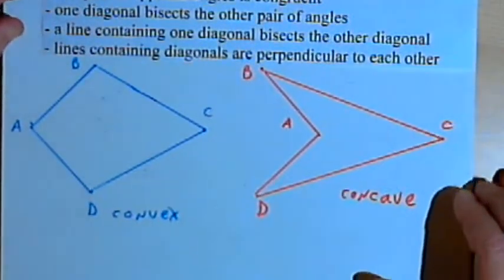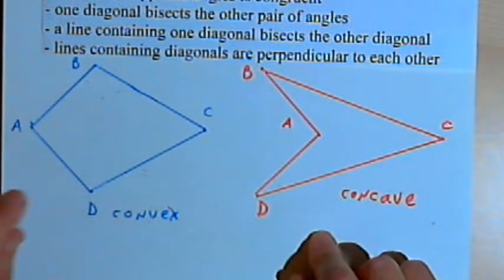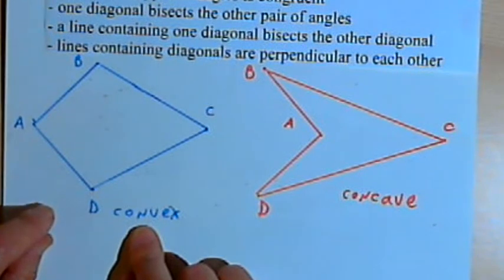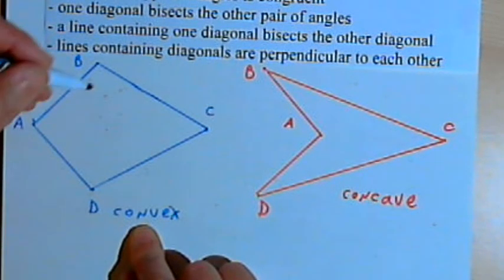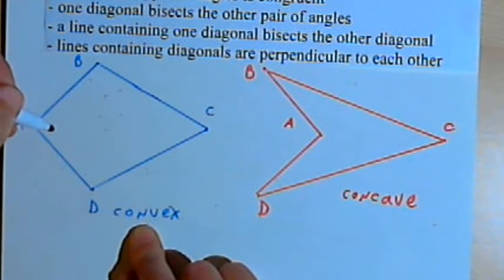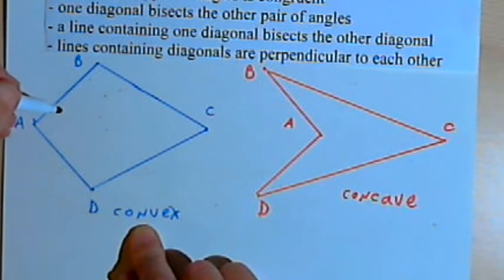Now I've drawn two kites here and they look very different. One is a convex kite. All of its interior angles are less than 180 degrees, so it's a convex polygon, and in this case it's a convex kite.